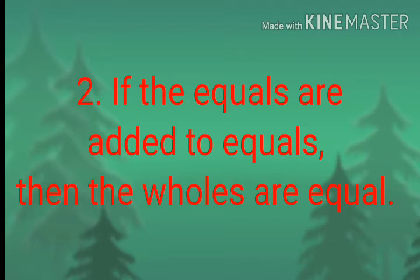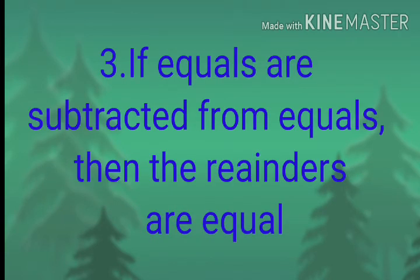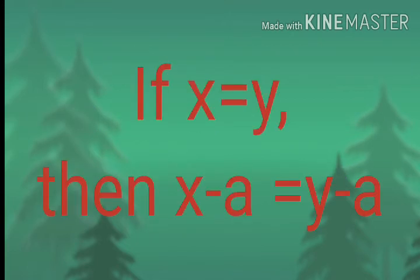When we add equals to equals, then the wholes are equal — when we add a to x and a to y, then the sums are also equal. The third axiom is: if equals are subtracted from equals, the remainders are equal. That means if x equals y, then x minus a equals y minus a.